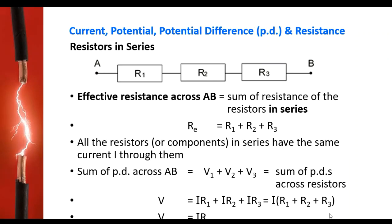For resistors connected in series, the effective resistance is the sum of the resistance of the resistors in series. In this example, the effective resistance across AB is the total resistance of R1, R2, and R3. In a series circuit, the potential difference across AB will be equal to the sum of the potential difference across the three resistors in series.